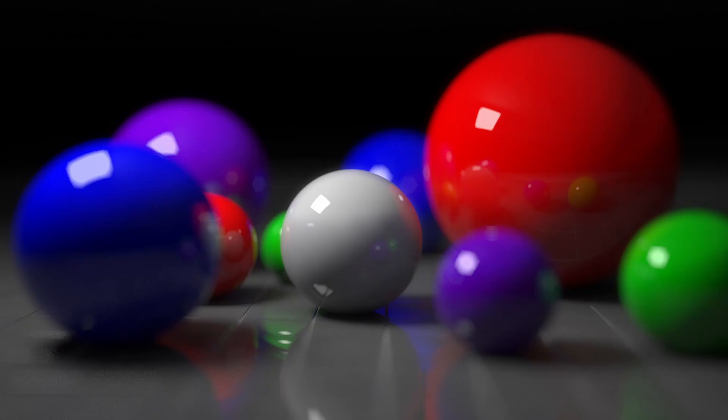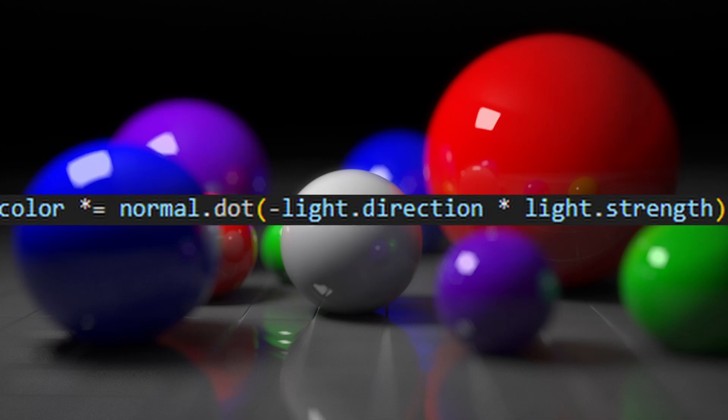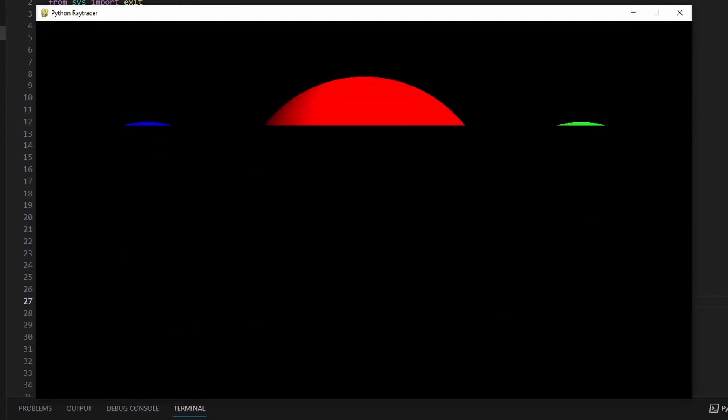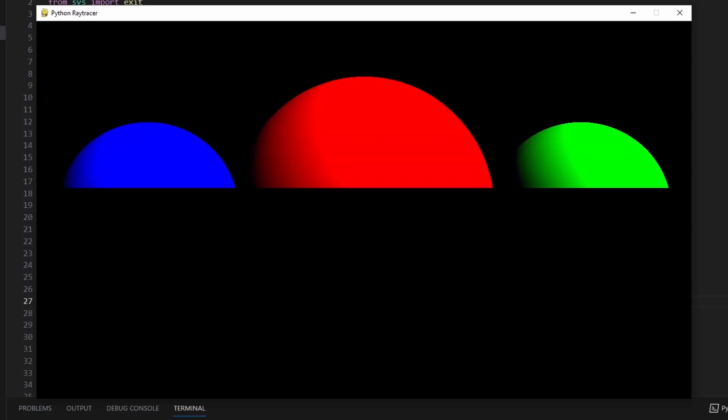To get an accurate shading on the sphere, we need to get the dot product between the normal from earlier and the inverse of the direction from a directional light source. This creates a dark undershadow from where the normals point away from the light source.